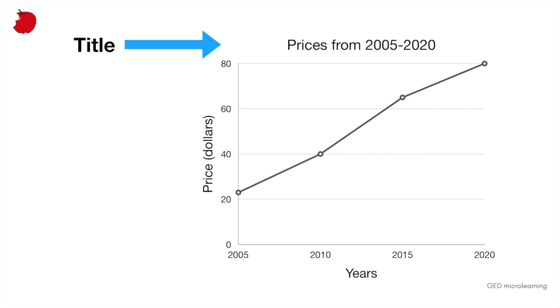You're going to look at your vertical axis or your y-axis, and that's telling you that this represents the price in dollars. So the price started at zero dollars and then it went the highest price is 80. So 20, 40, 60, 80.